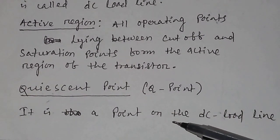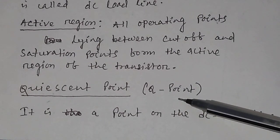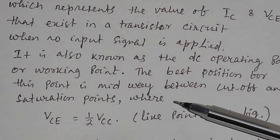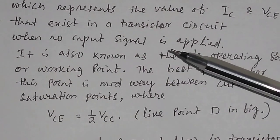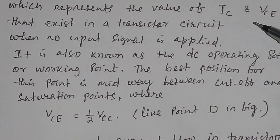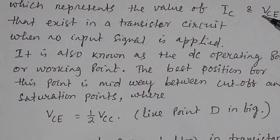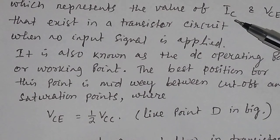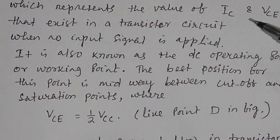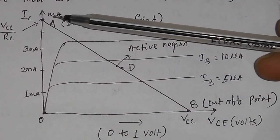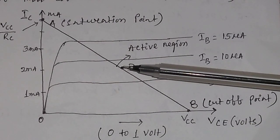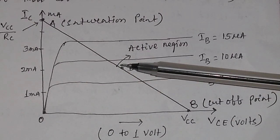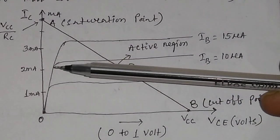What is the Q point? The Q point is a point on the DC load line which represents the value of IC and VCE that exist in a transistor circuit. From that point you can calculate the value of IC from the Y-coordinate and the value of VCE from the X-coordinate. So the Q point is a point on the DC load line with two coordinates: X-coordinate is your VCE and Y-coordinate is your IC.